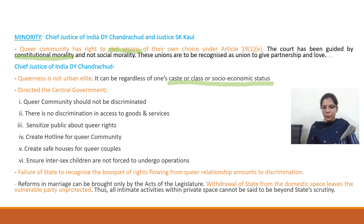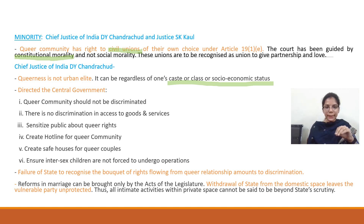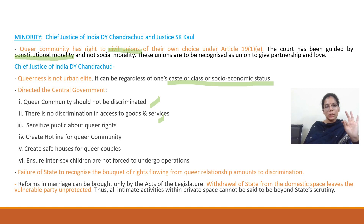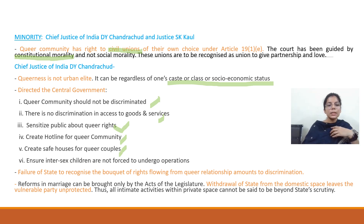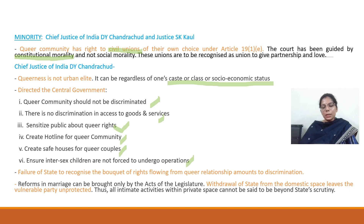He directed the central government that certain guidelines must be formed and certain steps must be taken, which include: the queer community should not be discriminated against; there should be no discrimination in access to goods and services to members belonging to the LGBTQ community; sensitize the public about their rights; create a hotline for the queer community in case they face any discrimination or harassment by public authorities so they can lodge their complaints; create safe houses for such couples; and ensure intersex children are not forced to undergo operations to change their sexual orientation.